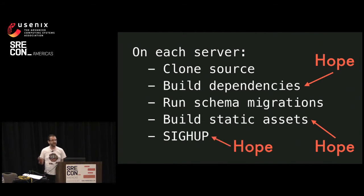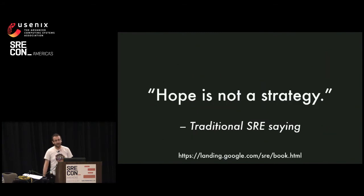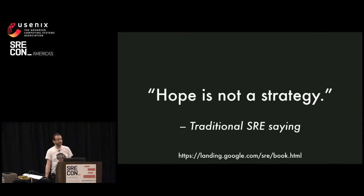Lastly, and kind of most scarily, is the SIGHUP. You send that to one of your Ruby web servers like Unicorn or Puma, it loads in the new code, and then maybe that code will actually serve requests. The old code is gone, and if it doesn't serve requests, you are now in a horrible situation. There's something I cribbed out of the SRE book: hope is not a strategy. I'm not trying to throw shade at Capistrano — tons of Ruby shops have used it for years and it kind of works — but we wanted to build a more reliable way of deploying our code.